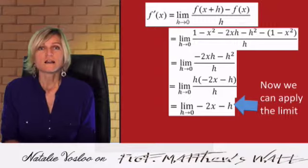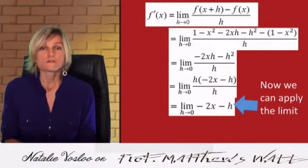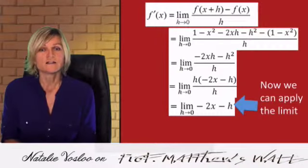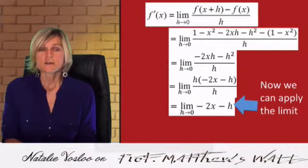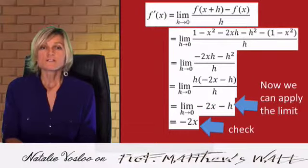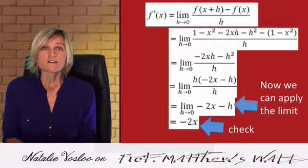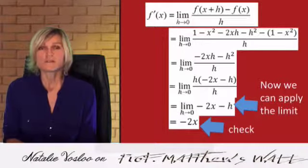We can do this now, because now, if we put h is equal to 0 into the expression, the expression will not have h in the denominator, so it will not become undefined. So, if we substitute in h is equal to 0, then the h disappears, and we are left with minus 2x. And, of course, you can check this answer, because we know how to do it using the short method. So, we have the correct answer, you've done it well, and now you have found the derivative of the function from first principles.